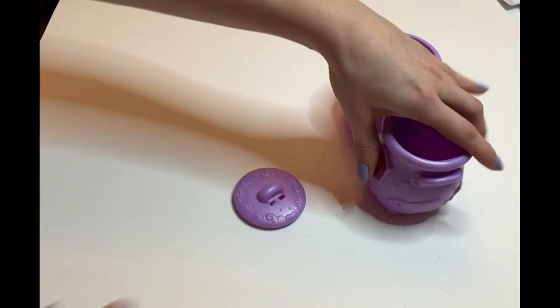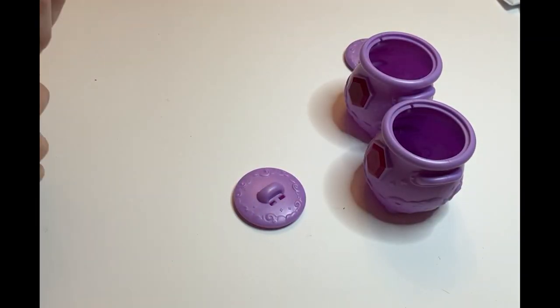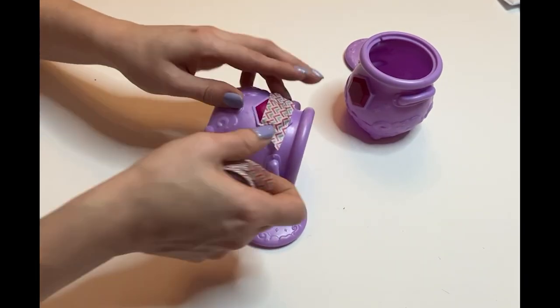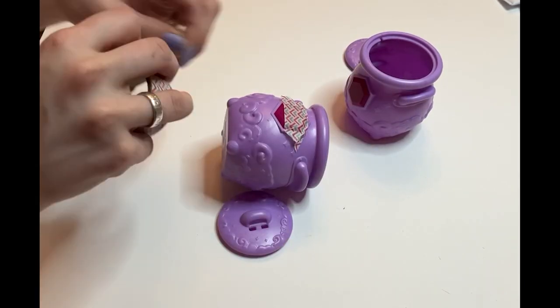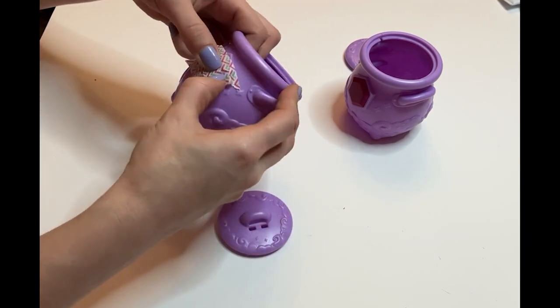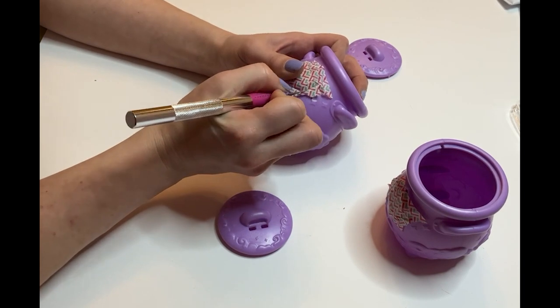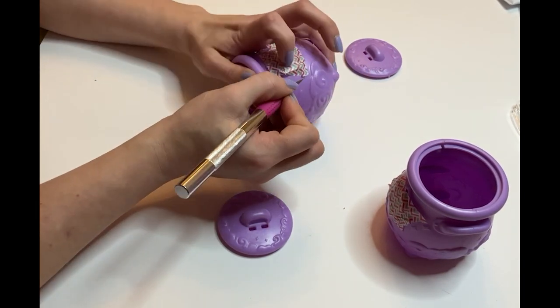First empty your cauldrons and cover the jewel on the cauldron with tape. Use a craft knife to cut away the excess.